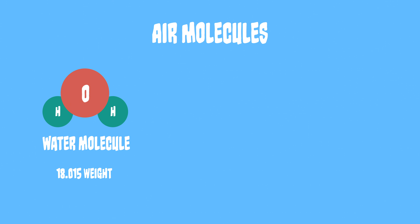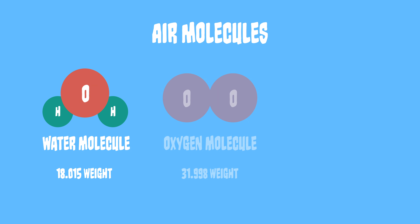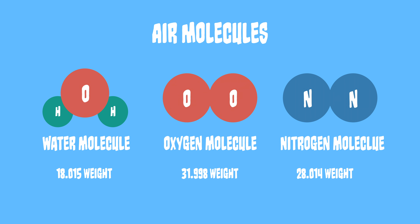Humidity also has an effect on the density of an air mass. This is because water vapor is lighter than the oxygen molecules and nitrogen molecules that make up the majority of the atmosphere. This means an air mass with high humidity will be lighter and less dense.